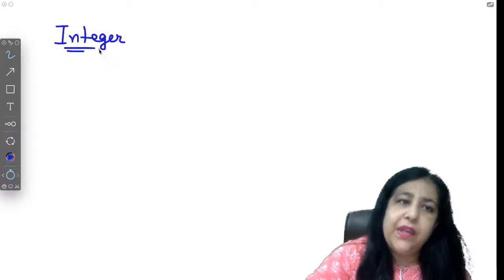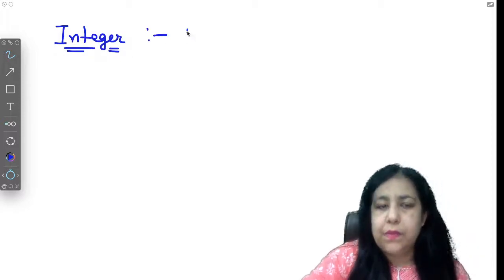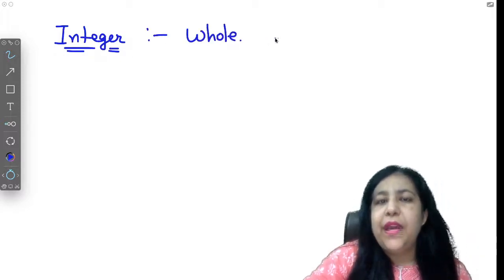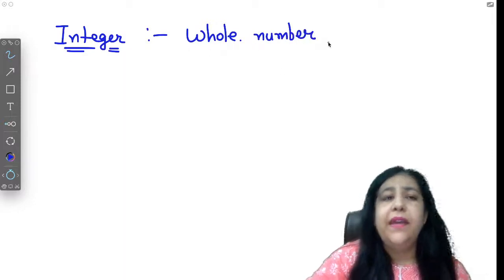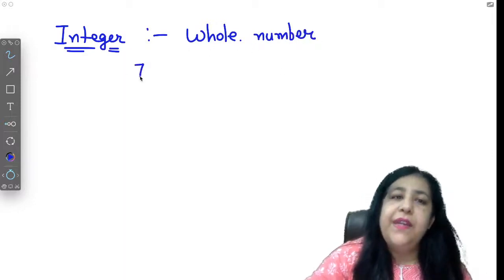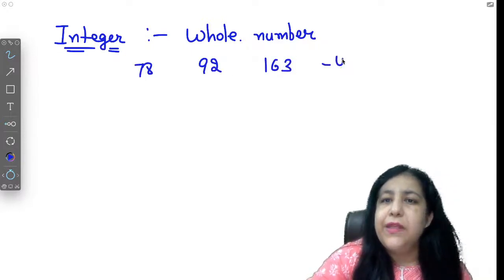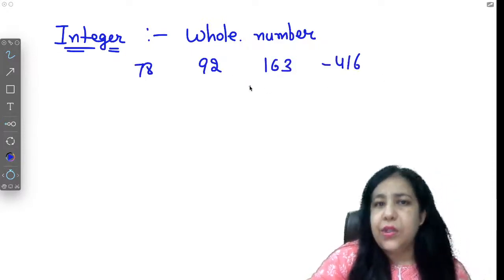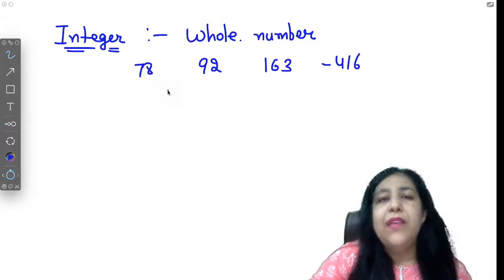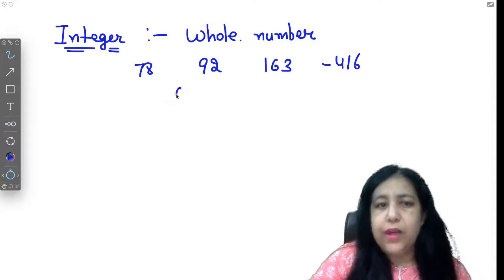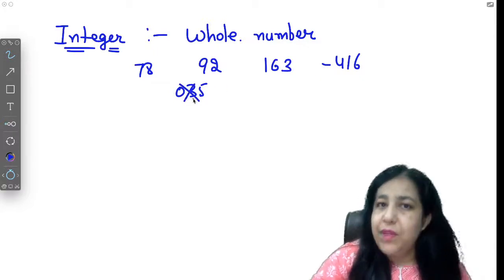Today we talk about primitive data types, of which the first category is integer. Integer is a whole number in simple words. The number which doesn't have a fractional part is called an integer. So 78, 92, 163, minus 416, these are integers.